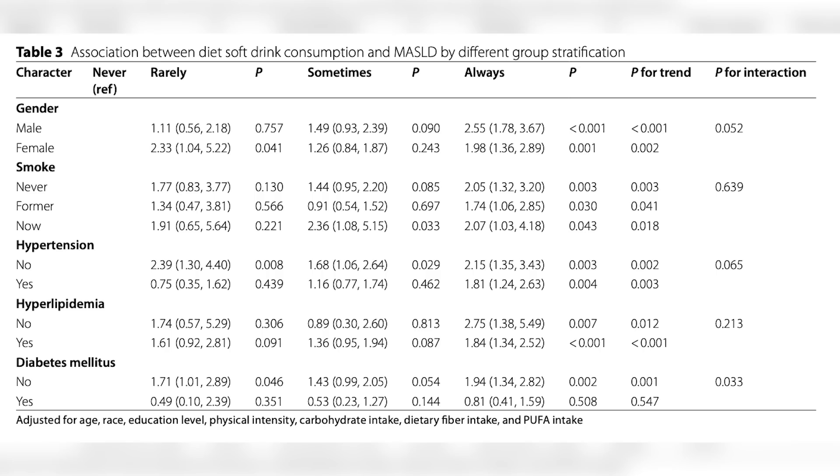In a randomized control trial, what they would do is randomize people into a diet soda group and a non-diet soda group and see what happens to fat in their liver over time. Randomization is important because in epidemiology or cohort data, results can often be explained by confounding variables — somebody who is more likely to drink diet soda may be more likely to be obese. Was it the diet soda or was it the obesity? In an RCT, through randomization, you can assume any inherent differences in participant characteristics are randomly distributed across groups.